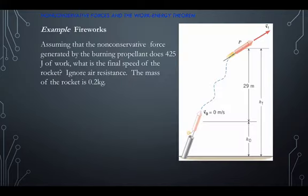Okay, let's apply this to an example. Pause here if you think you can do this on your own. It's not super difficult, so I would suggest it. Otherwise, just follow along with me. We have a firework that's launched from this position. A non-conservative force generated by the burning propellant does 425 joules of work, and it raises to a height of 29 meters above its starting point. We need to figure out how fast this rocket is moving if it has a mass of 0.2 kilograms.